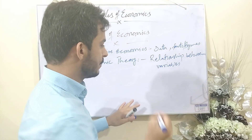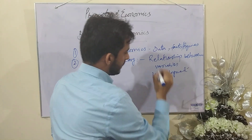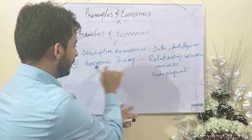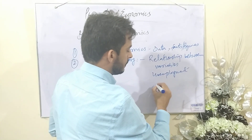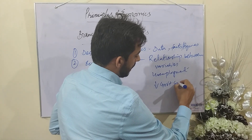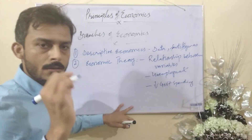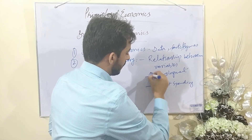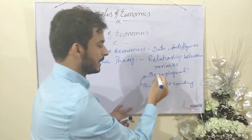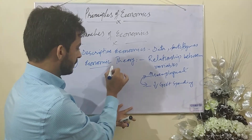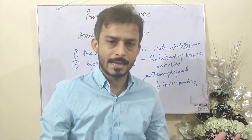Continuing with our unemployment example: in descriptive economics we said unemployment is high. Now in economic theory, we need to describe the relationship — we need to understand why unemployment is high. For example, one reason can be low government spending. These are two different variables: unemployment and government spending. When government spending is low, unemployment increases. We need to understand this relationship — unemployment depends on government spending. This is economic theory, where you explain and analyze the different variables of an economic problem.